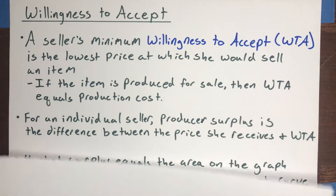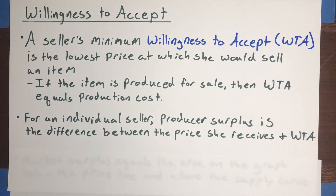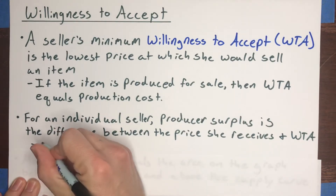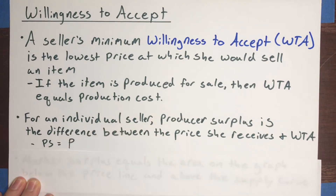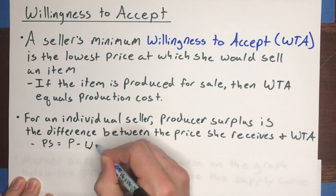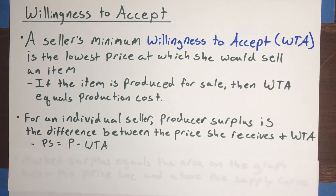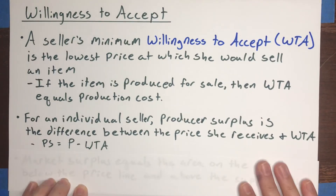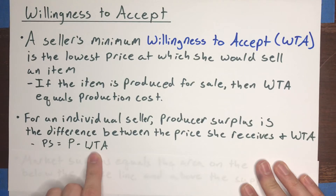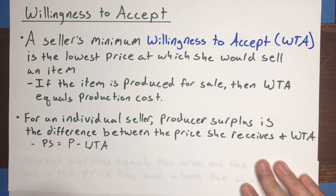The formula for producer surplus is: producer surplus equals the price P minus the minimum willingness to accept (WTA). Now that's on the individual level. The notion of producer surplus as profit is pretty straightforward — if it cost me $10 to produce a unit and I sell that unit for $15, my producer surplus was $5. It's just equal to my profit in that case.